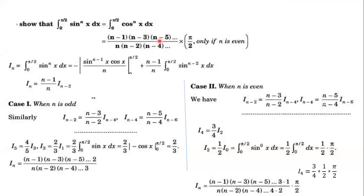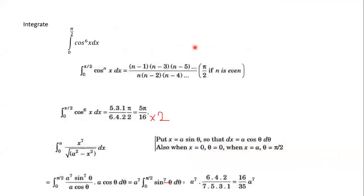We have to take this term and if the even power is divided by 2. For example, we have solved cos raised to 6. What is the reduction formula for even power? We have to reduce the term by the odd term, and the denominator is the even term. Here we have 6 in power, so from 6 to odd terms: 6 minus 1 is 5, 6 minus 3 is 3, 6 minus 5 is 1. After this, negative terms are not taken.